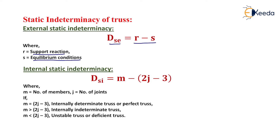In trusses, there will always be 3 equilibrium conditions: summation of all vertical forces equals zero, summation of all horizontal forces equals zero, and net moment at any point equals zero.